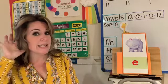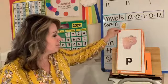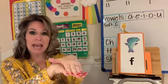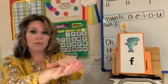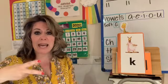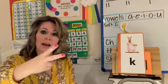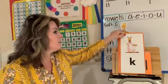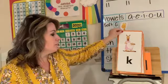Oh, no. All right. The letter is P and the sound is puh, puh, puh. The letter is F and the sound is fuh, puh, puh. The letter is K and the sound is k, k, k. The letter is B and the sound is buh, buh, buh.